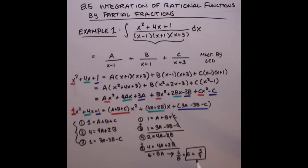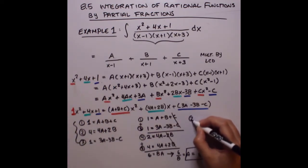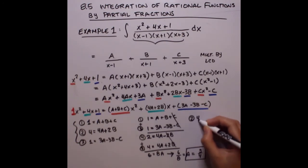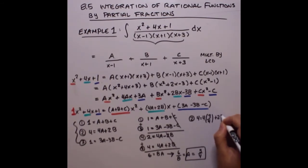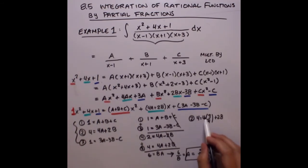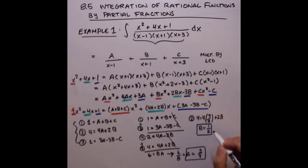Now plug A = 3/4 back into equation 2: 4 = 4(3/4) + 2B. Solving for B gives B = 1/2.